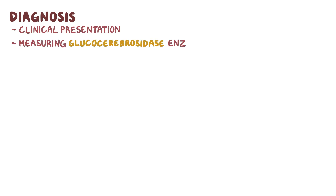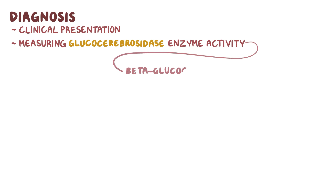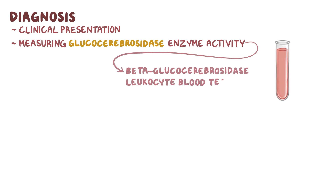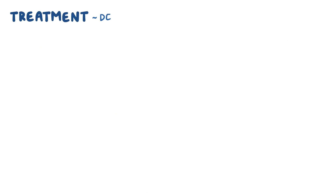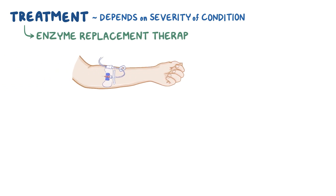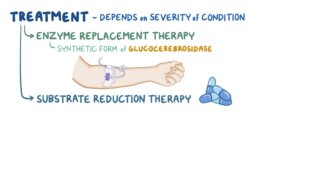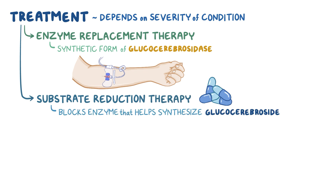Diagnosis of Gaucher disease relies on clinical presentation and measuring glucocerebrosidase enzyme activity with the beta-glucosidase leukocyte blood test. Genetic testing can be done to look for mutations in the GBA gene. Treatment depends on the severity of the condition, and can include enzyme replacement therapy with a synthetic form of glucocerebrosidase, as well as substrate reduction therapy designed to block the enzyme that helps synthesize glucocerebroside. Symptoms can be managed with supportive therapy.